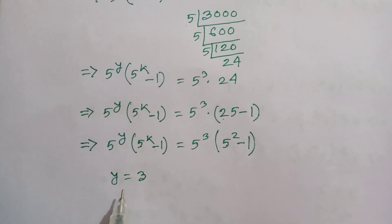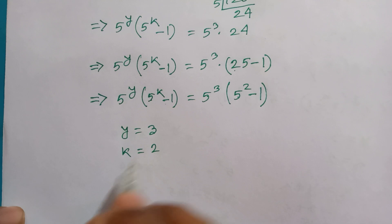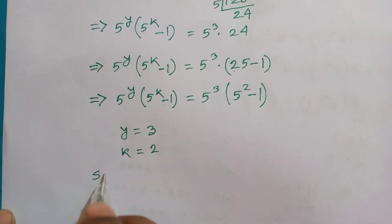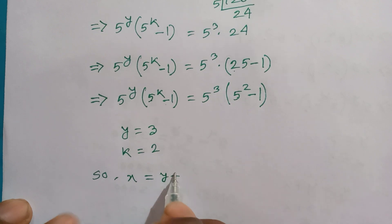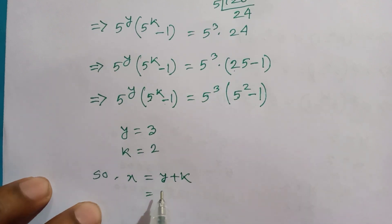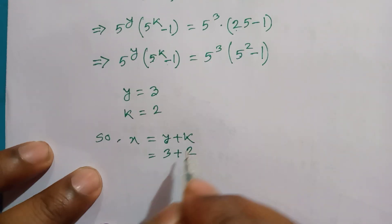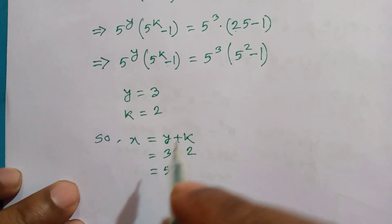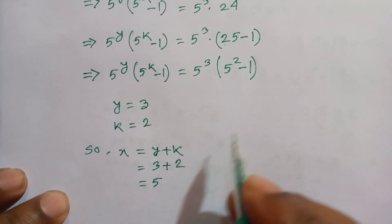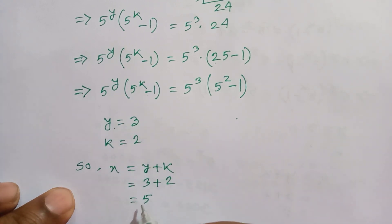Comparing both sides, y is equal to 3 and k is equal to 2. Since x equals y plus k, we get x equals 3 plus 2, which is 5.